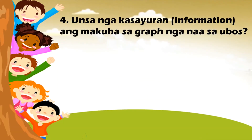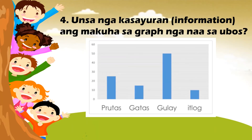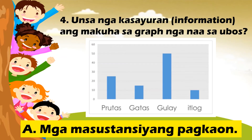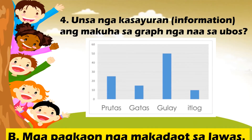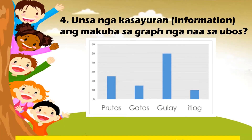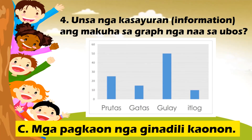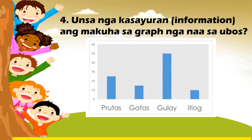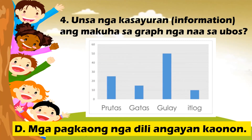Unsa nga kasayuran o information ang makuha sa graph sa ubos? A. Mga masustansyang pagkaon. B. Mga pagkaon nga makadaot sa lawas. C. Mga pagkaon nga ginadili kaunon. D. Mga pagkaong dili angayan kaunon.